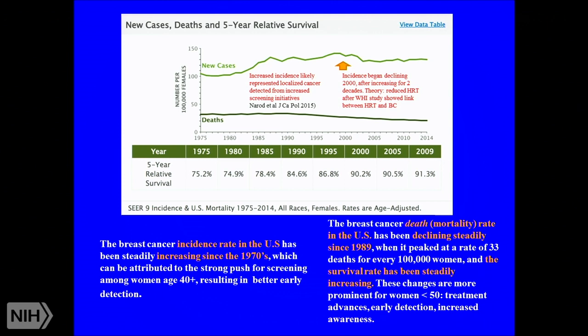The incidence of breast cancer in the U.S. has been steadily increasing since the 1970s, largely attributed to stronger screening and earlier detection. Around 2000 there was a slight decrease in incidence, theoretically due to the Women's Health Initiative study — when we realized hormone replacement therapy was a risk factor for breast cancer and it was largely eliminated. The mortality rate has been declining, likely due to advances in treatment, early detection, and increased awareness.